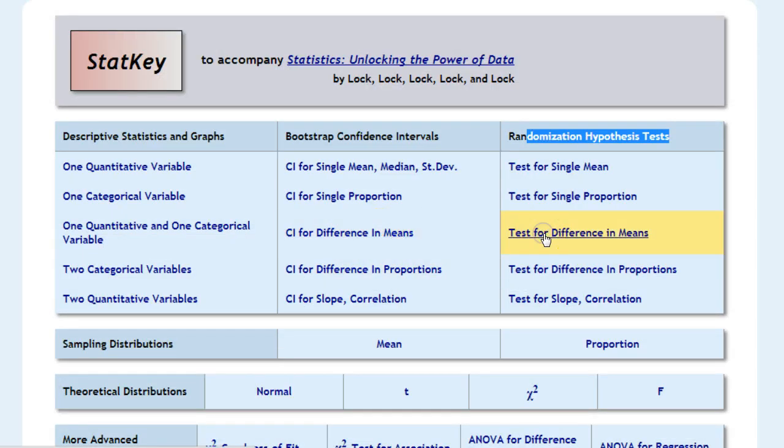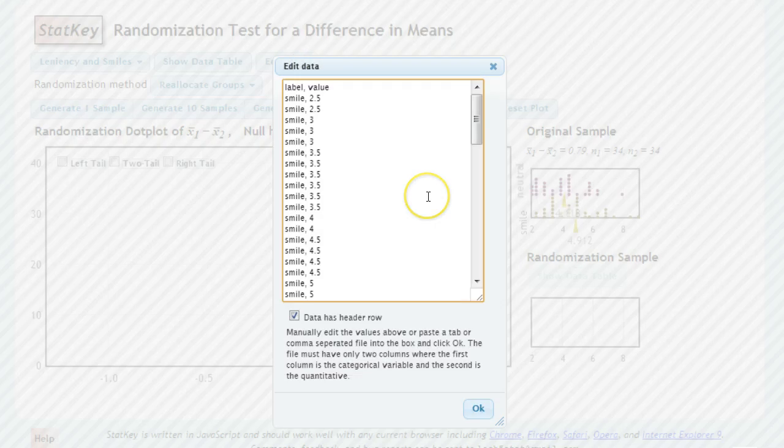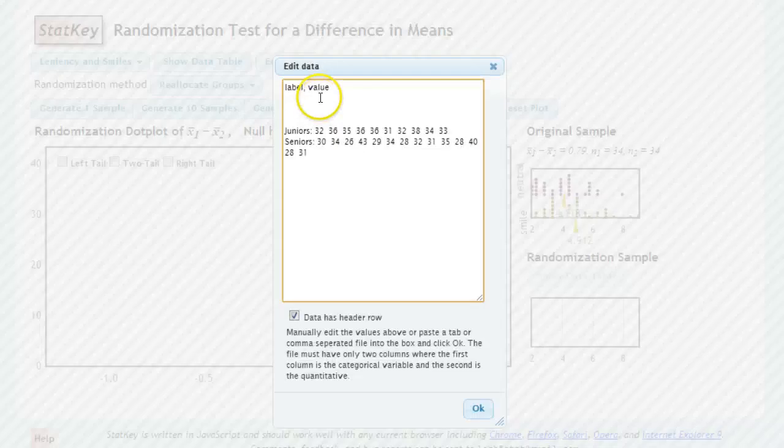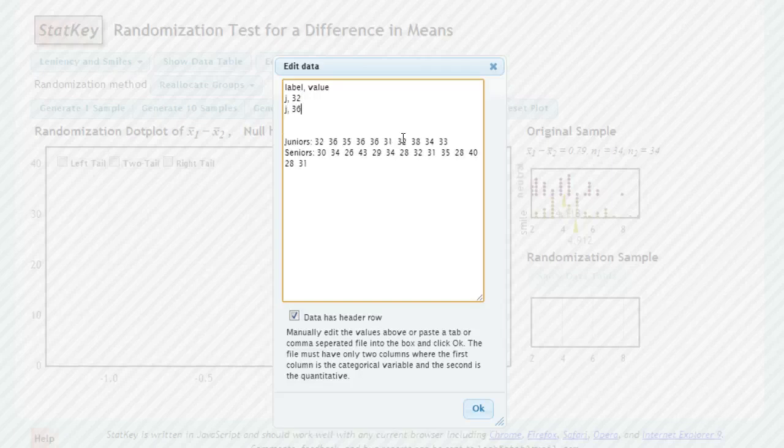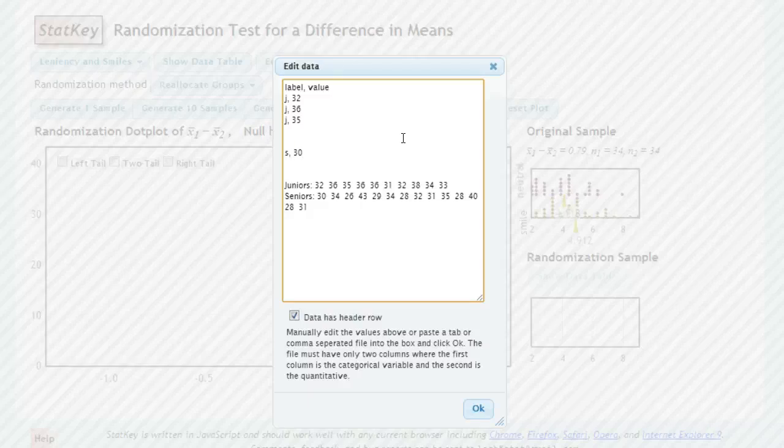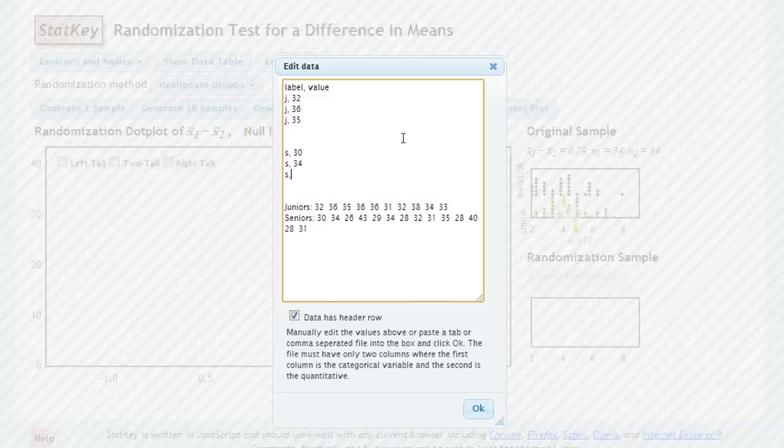So we go ahead and click on that. And we fill in our data. And you can see here, the way the data is set up, it has the group that it's in, followed by a comma, and then the actual number. So, looking at our data here, it would be junior comma 32, junior comma 36, junior comma 35. And each of those pairs would get its own row. My shortcut, if you ever have to enter this kind of data by hand, is just to use a single letter, such as J and S. So, if I do J comma 32, J comma 36, and so forth for each of the juniors, then I will have all of those data points entered. And then for all of my seniors, I have a 30, a score of 30. So, I do S comma 30, S comma 34, and so forth with all of my seniors. And so, let's get all that data entered.